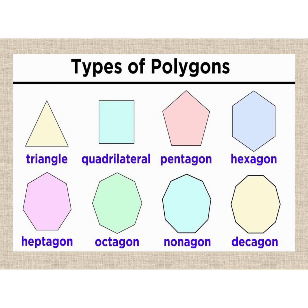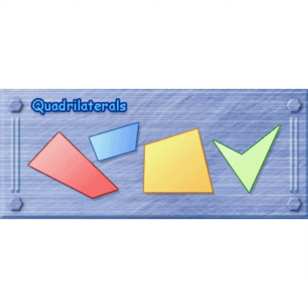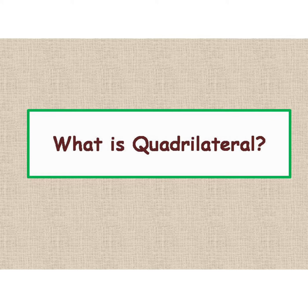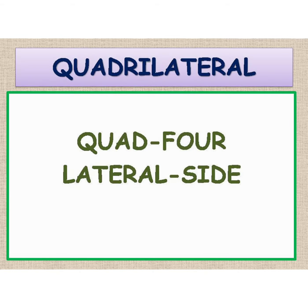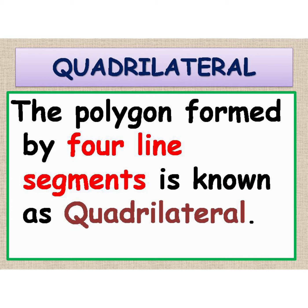There are different types of polygons classified on the basis of number of line segments. Quadrilateral is also a polygon. Today we will learn about quadrilateral. The word quadrilateral is made up of two words: quad means four and lateral means side. So a quadrilateral is a polygon formed by four line segments.